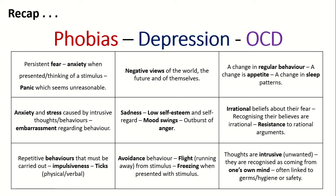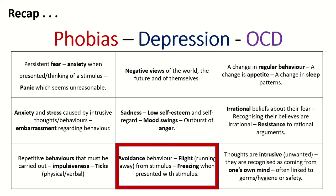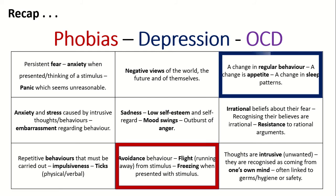Okay, let's go through the answers. Behavioural characteristics are always easiest to identify — they often appear as multiple choice questions because we're looking at things we can physically observe. With phobias, people avoid the situation — they might show characteristics of flight, running away from the stimulus, or freezing. Behavioural characteristics for depression include a change in regular behaviour, a change in appetite, or a change in sleep patterns — appetite might increase or decrease, such as comfort eating or not eating at all. Sleep patterns may also change — struggling to get out of bed, feeling tired and lethargic, or insomnia. For OCD, it's repetitive behaviours that must be carried out — impulsiveness, tics, which could be physical or verbal.